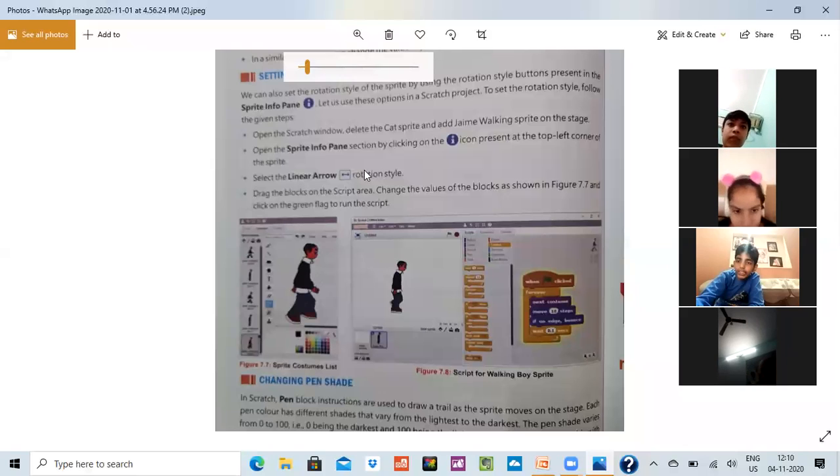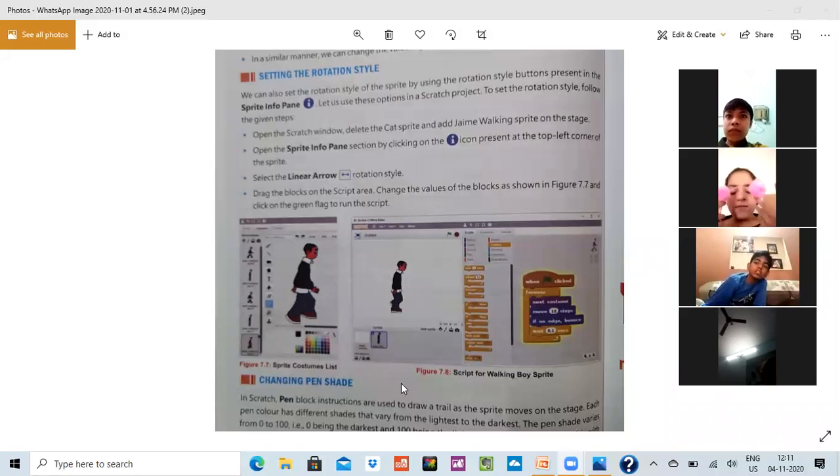So what you have to do, there is a linear arrow. You have to click on that linear arrow, and after clicking on that linear arrow you can change the directions that wherever you want to move you can move it.